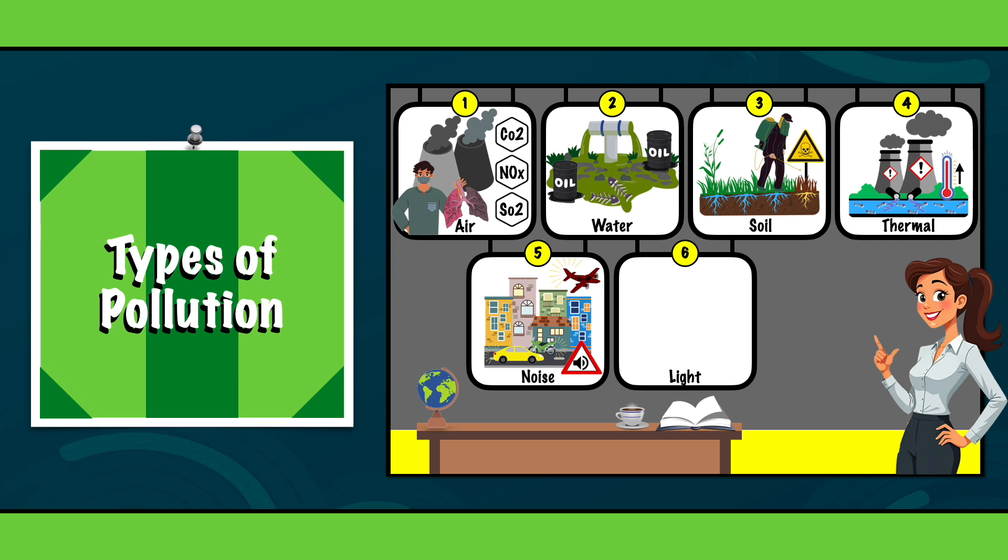6. Light pollution. Light pollution is a growing issue in cities around the world, driven by excessive artificial lighting. It disrupts natural ecosystems, harms human health and threatens both biodiversity and cultural heritage.